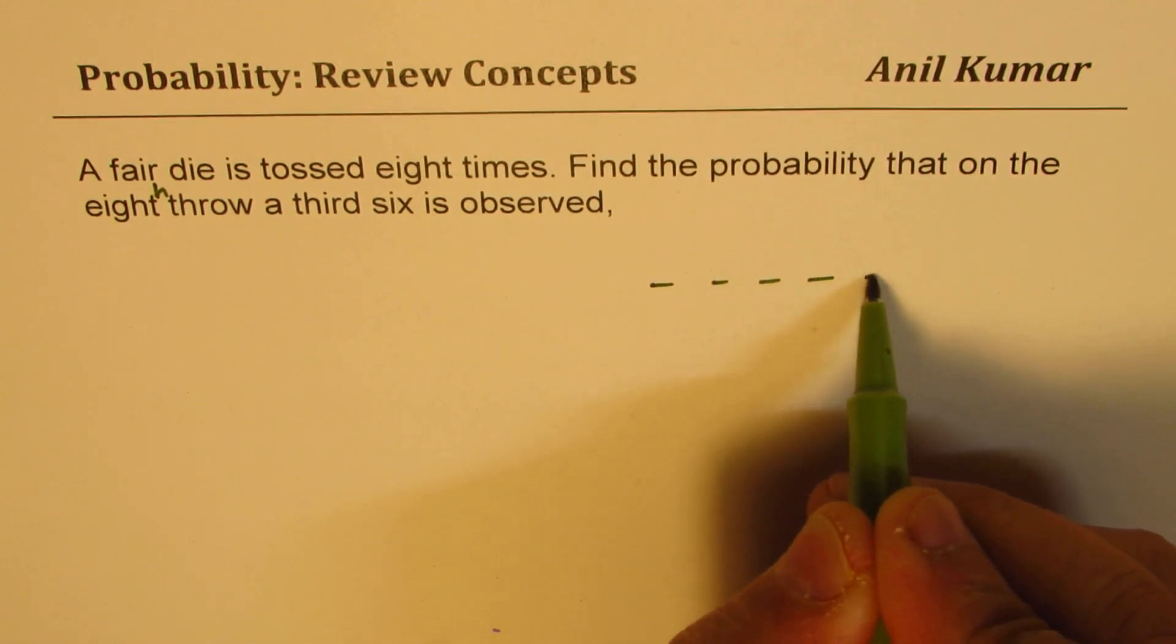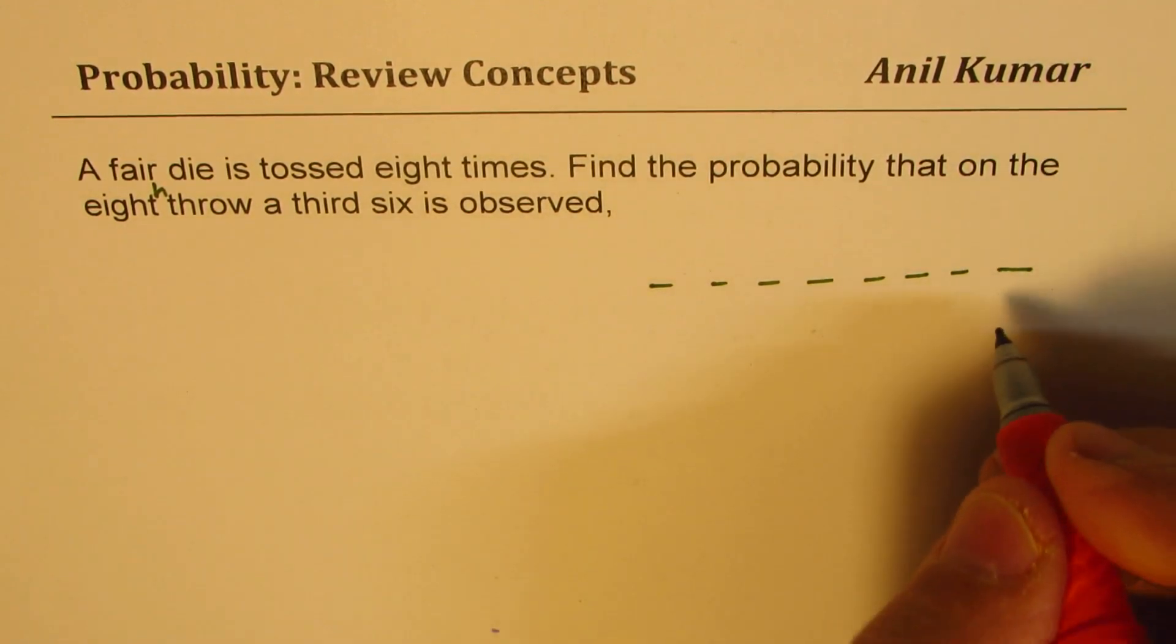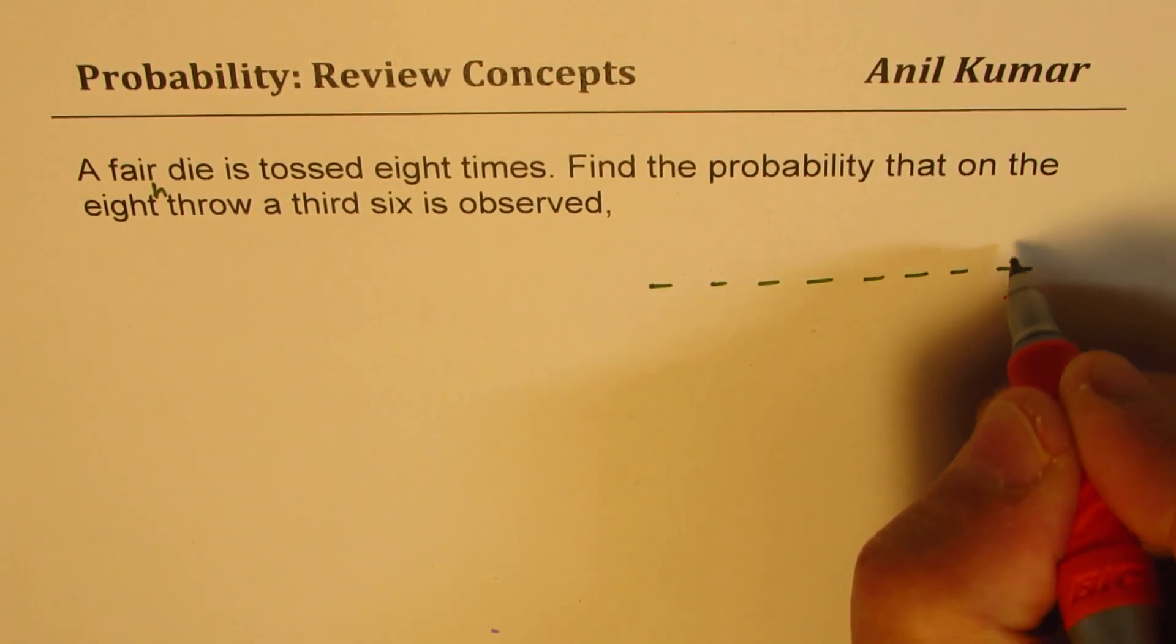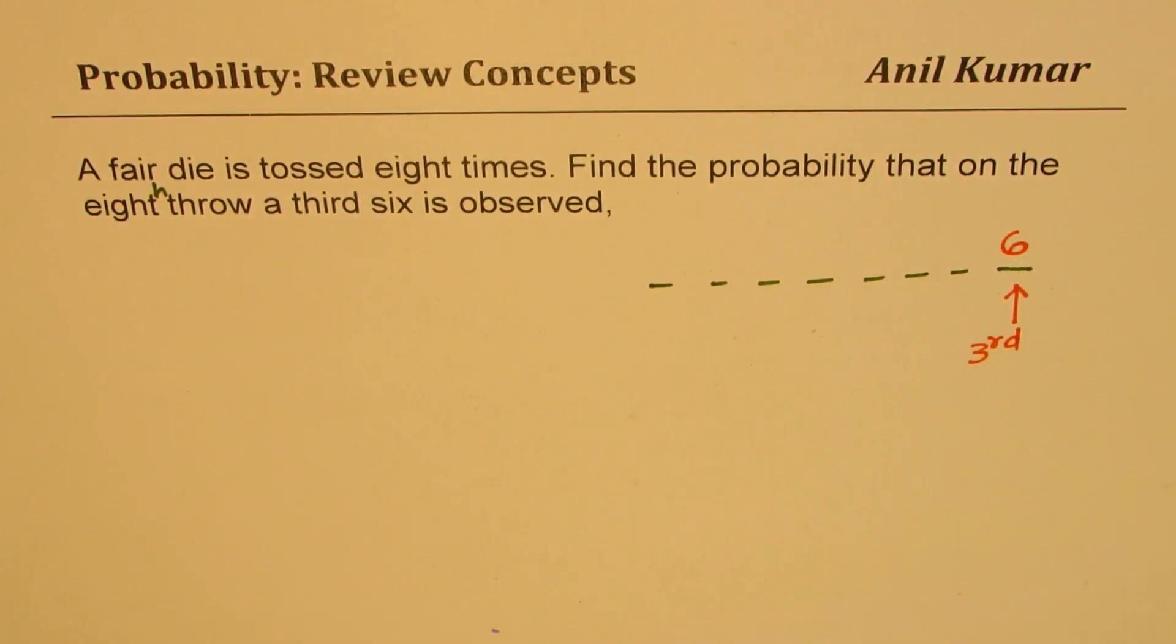So basically we have eight tosses—one, two, three, four, five, six, seven, eight. The question says that on the eighth toss, we have a six and that too, third six. So that is the question.